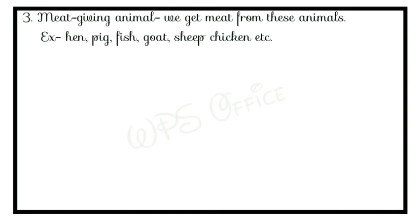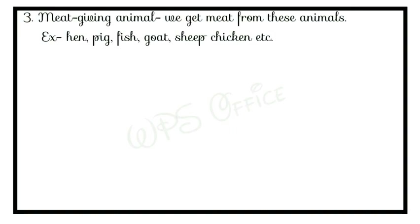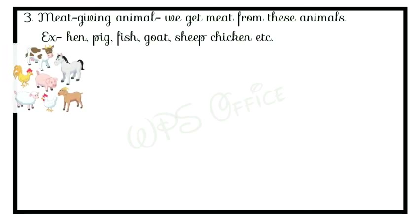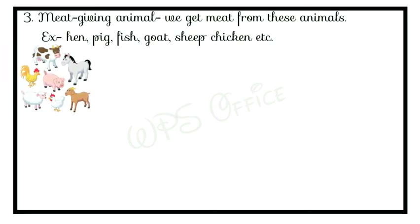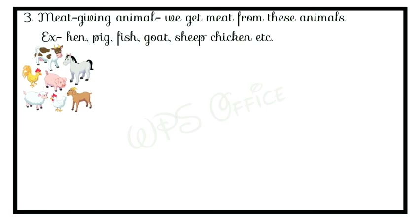The third category is meat-giving animals. We get meat from these animals. For example, hen, pig, fish, goat, and sheep all give us meat, which is used as food.